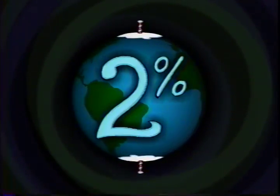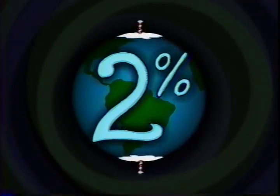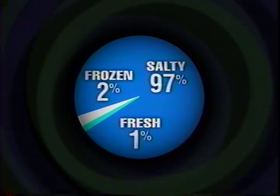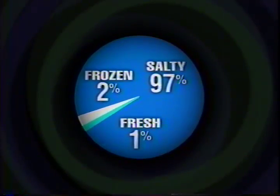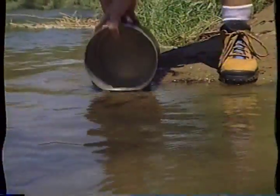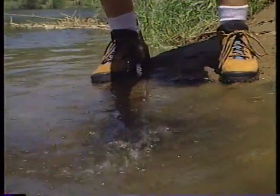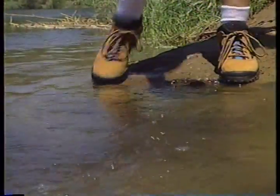2% of the Earth's water is frozen at the north and south poles. If 97% of the Earth's water is salt water and 2% is frozen, that means just 1% is available fresh water — and some of that is polluted, so we can't even use it. We have to be careful with the fresh water we have, because we share it with other living things.